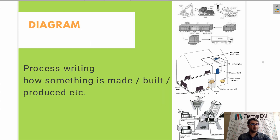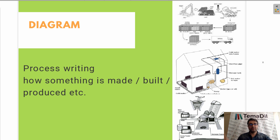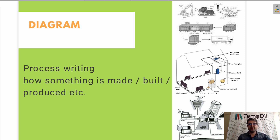The last one is diagrams. In diagrams we are usually asked to write process writing. In a process writing, we are usually given a process like the production of chocolate, the production of electricity, or how wind is produced via wind turbines. When we are given the diagram, we are asked to define what is going on in it. Here again, we are not going to include our own opinions in the writing.